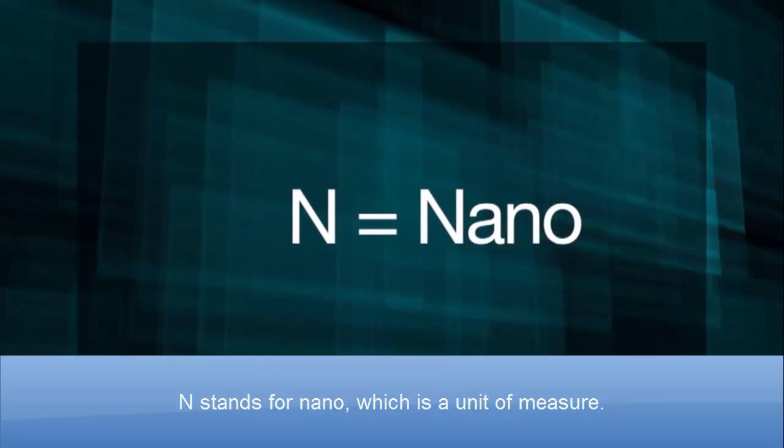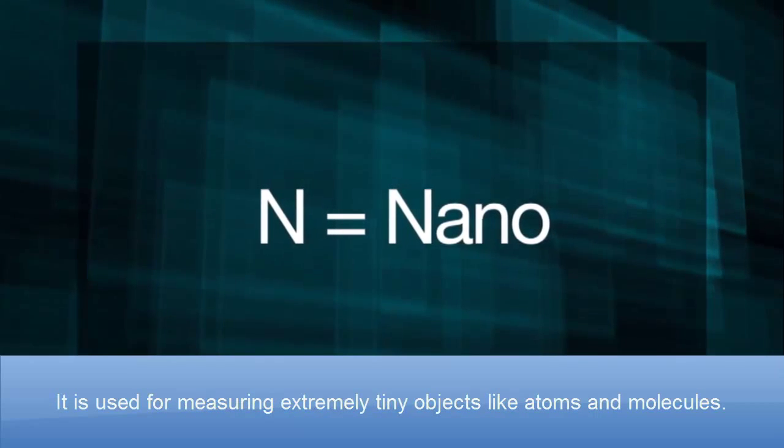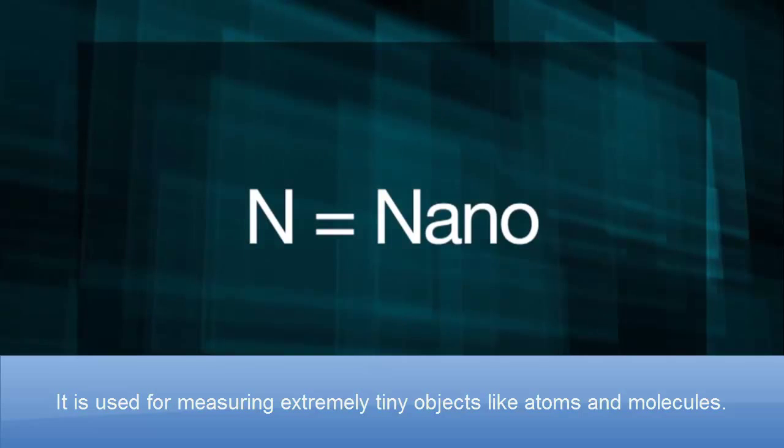N stands for nano, which is a unit of measure, and it's used for measuring extremely tiny objects like atoms and molecules.